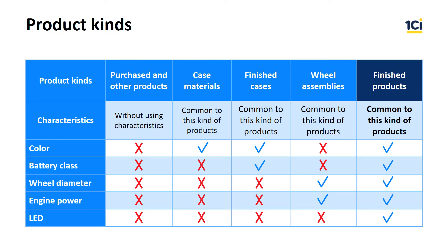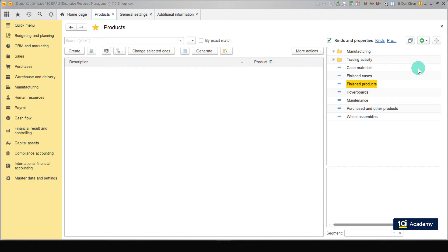The materials used for production are defined in bills of resources. This means we need to specify that the characteristics used for the Finished Products product kind are common with other product kinds – semi-finished products and purchase components. As you can see, we've already created these product kinds. Now, let's enter the characteristics for the Finished Products product kind.